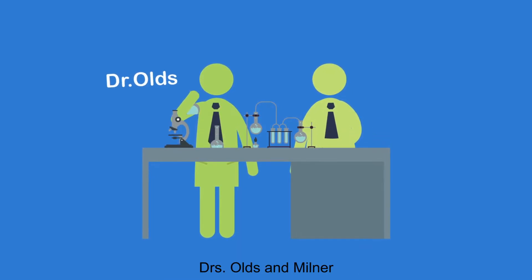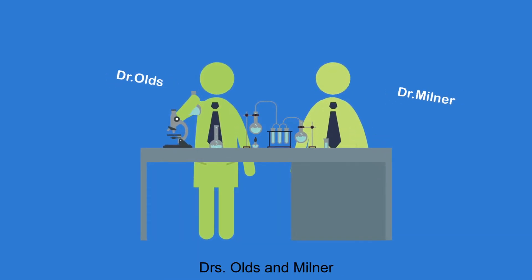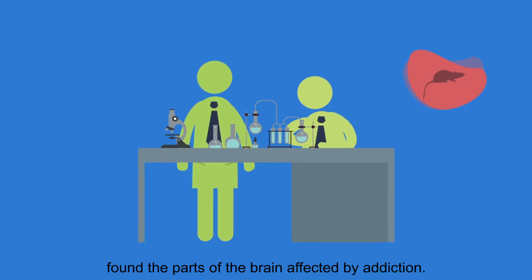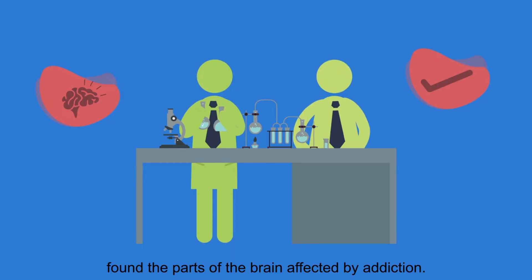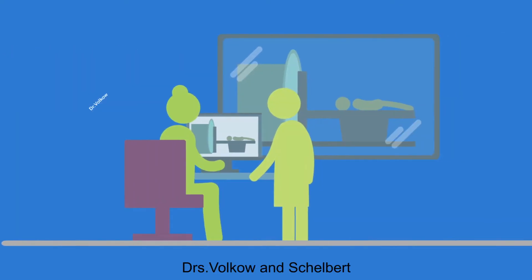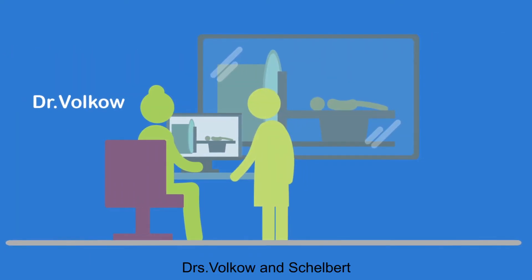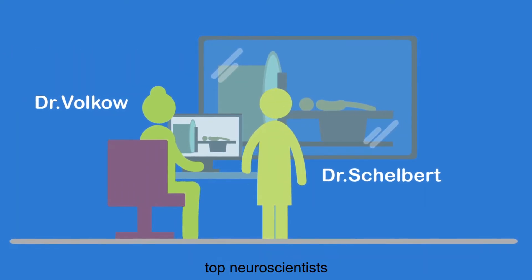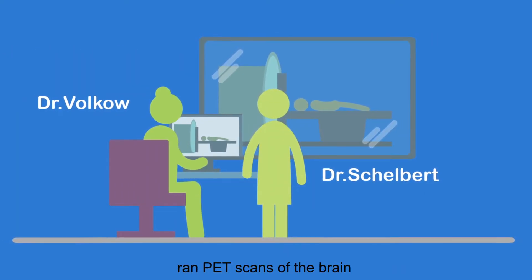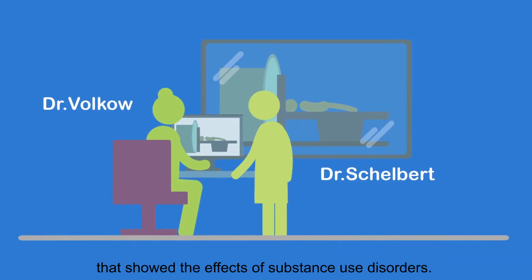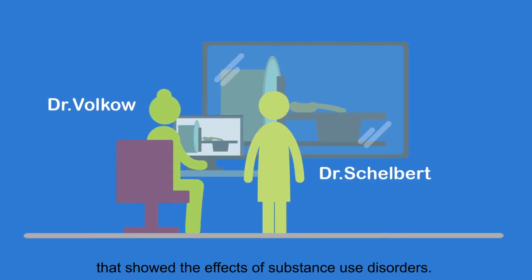Doctors Olds and Milner, in laboratory studies of rats, found the parts of the brain affected by addiction. But then, in 1994, Doctors Volkoff and Shelbert, top neuroscientists, ran PET scans of the brain that showed the effects of substance use disorders.